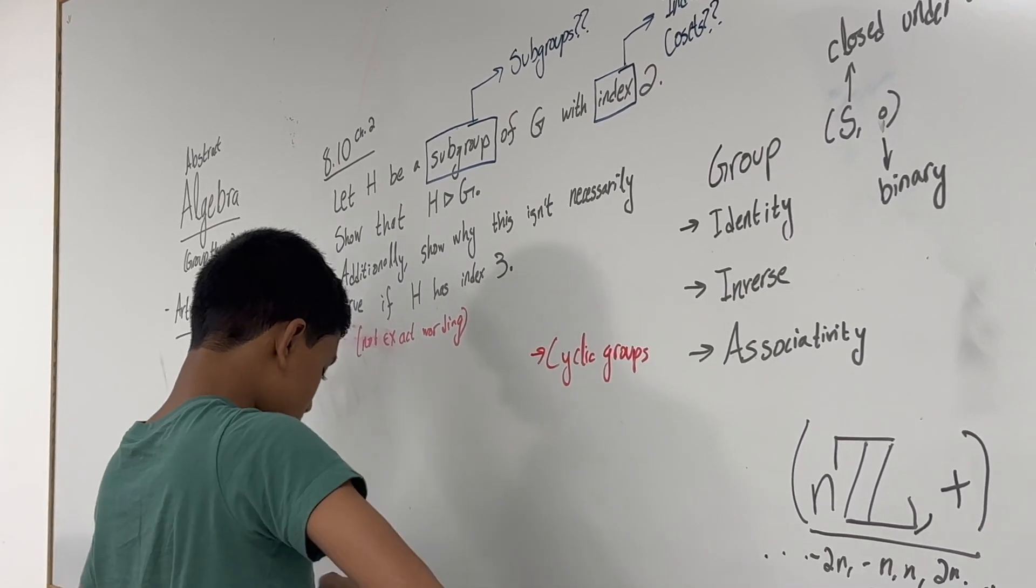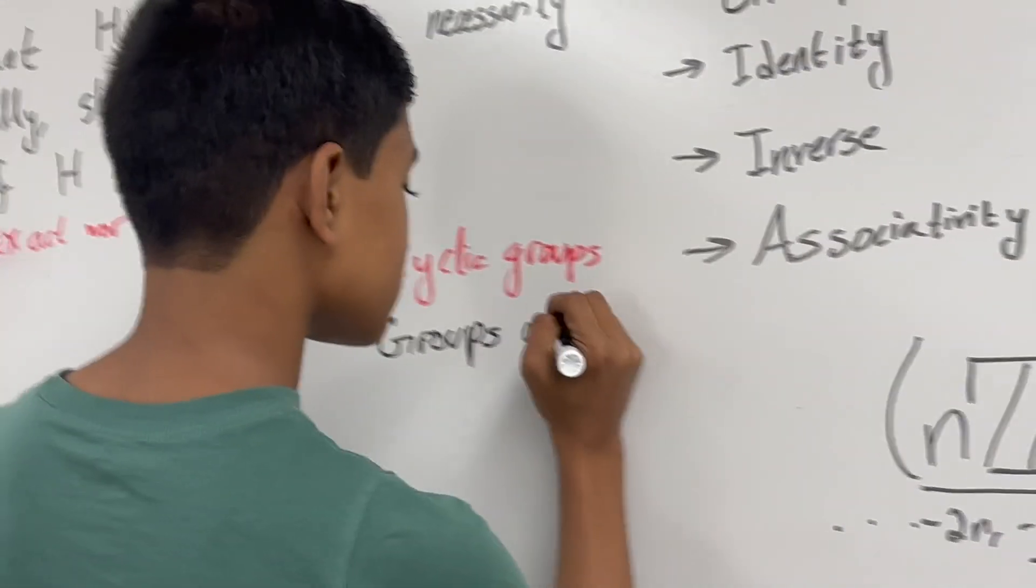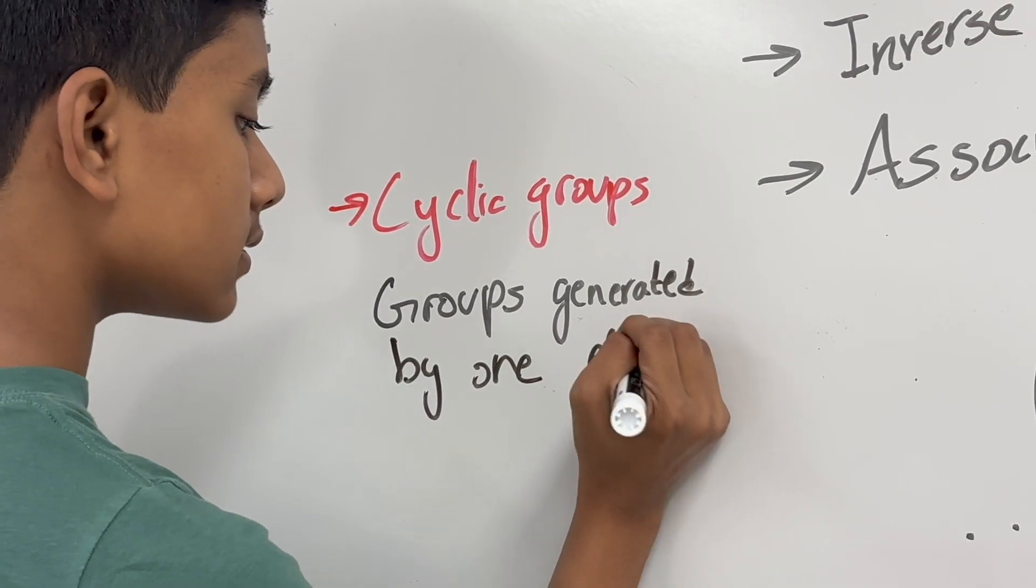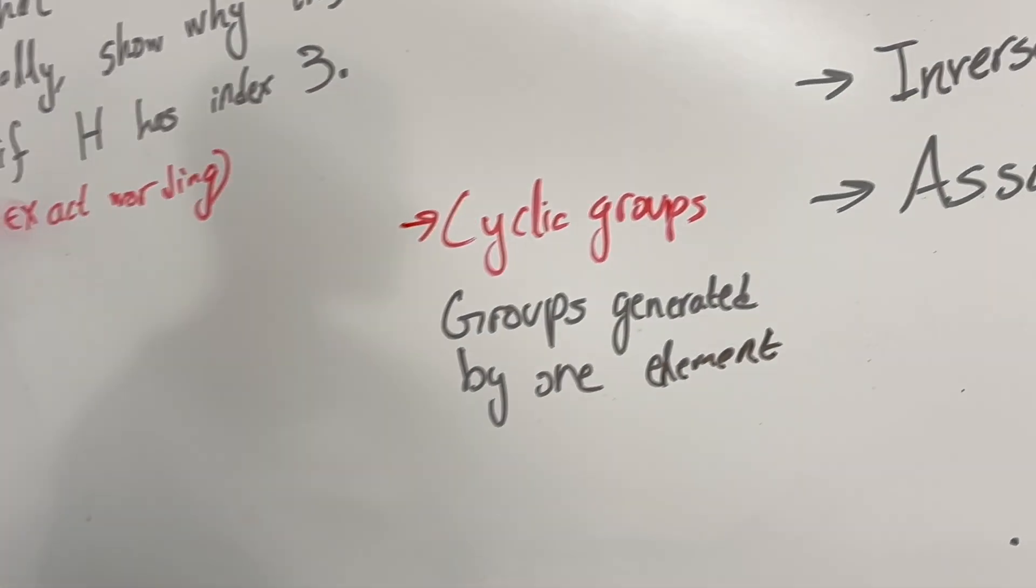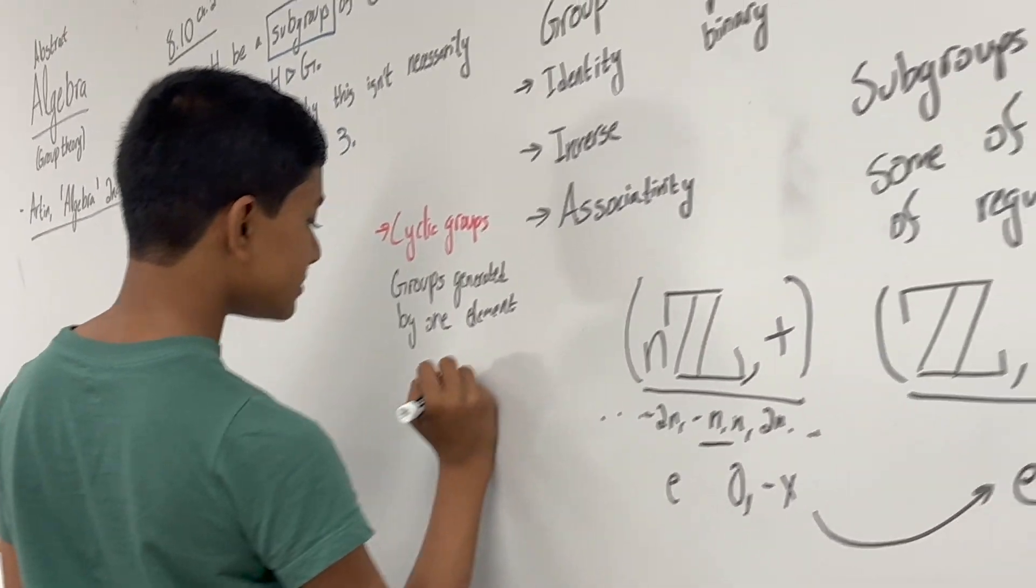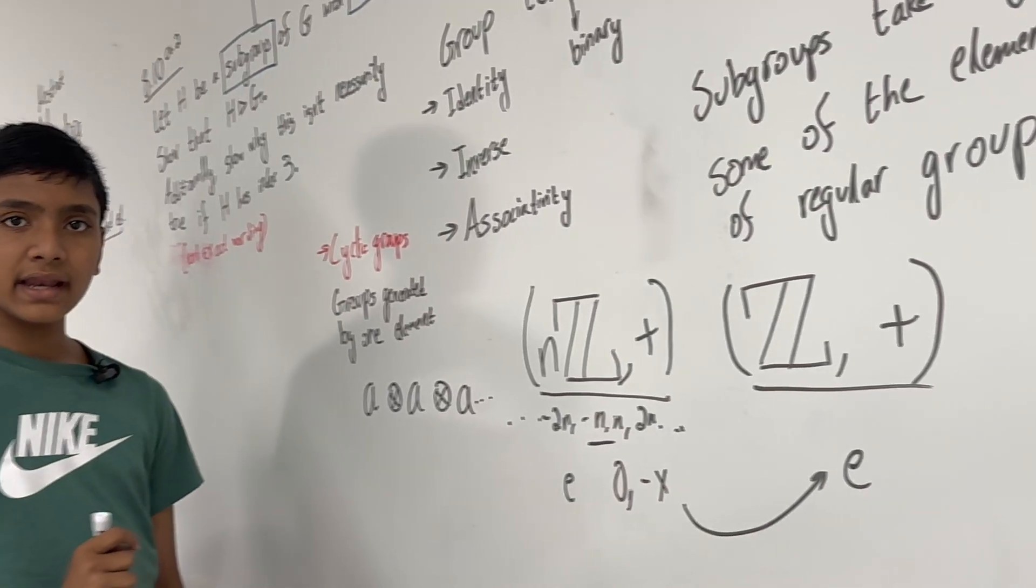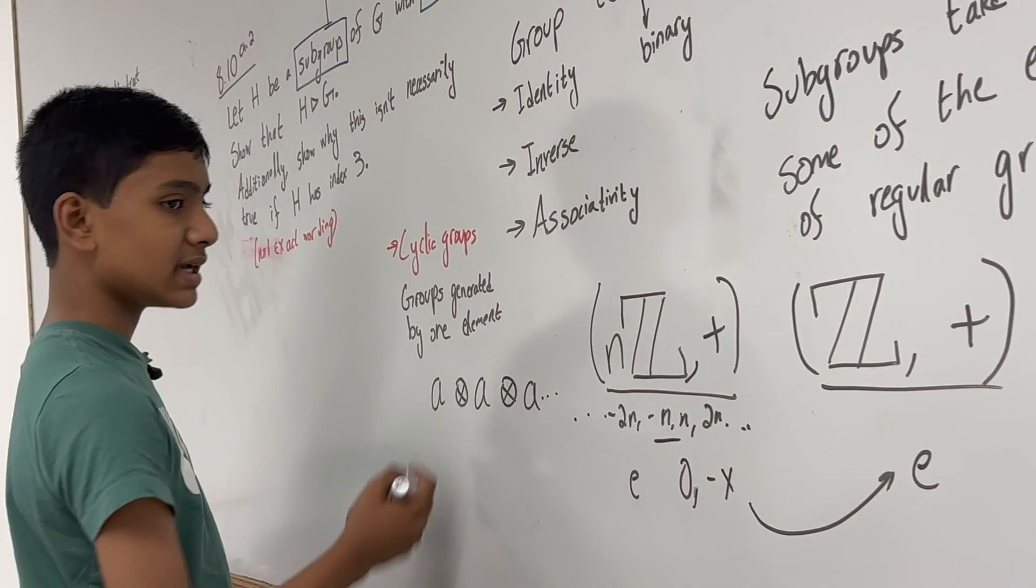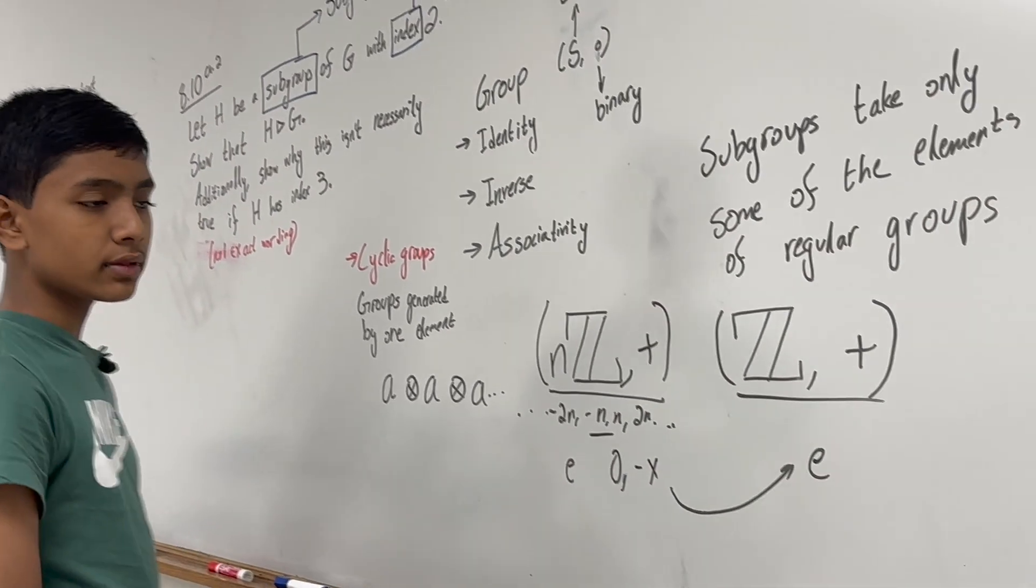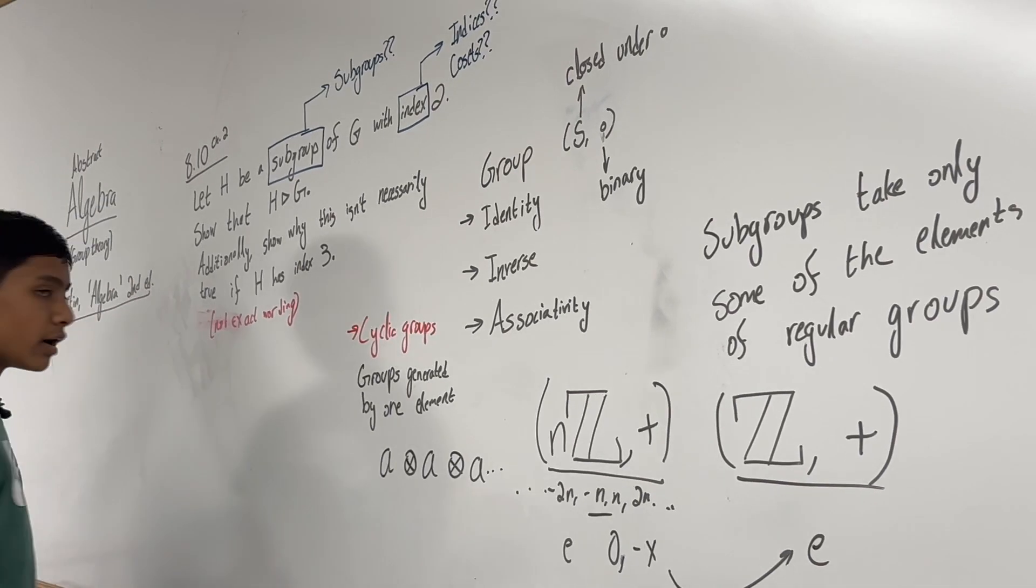A coset is pretty special, because if you've read this far into the book, you already know about cyclic groups. These are just groups that are generated by one element, where every single element of the group can be represented as one specific element crossed with itself some number n times.